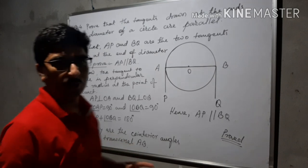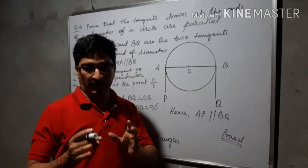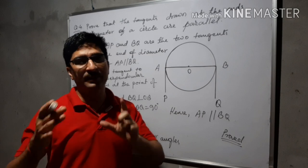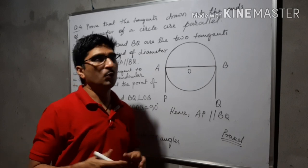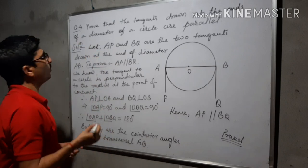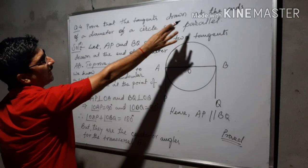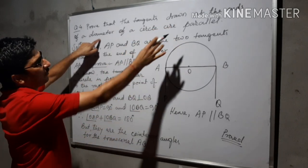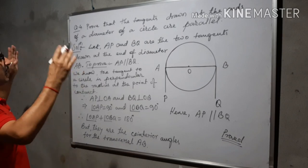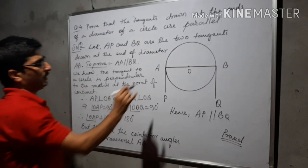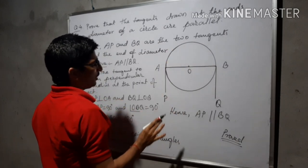Friends, the next question is question number 3 — that one you will have to solve yourself, and if you can solve it, send it to me. You can WhatsApp me. Now question number 4: Prove that the tangents drawn at the ends of a diameter of a circle are parallel. This is the diameter of a circle with center O. AB is the diameter.